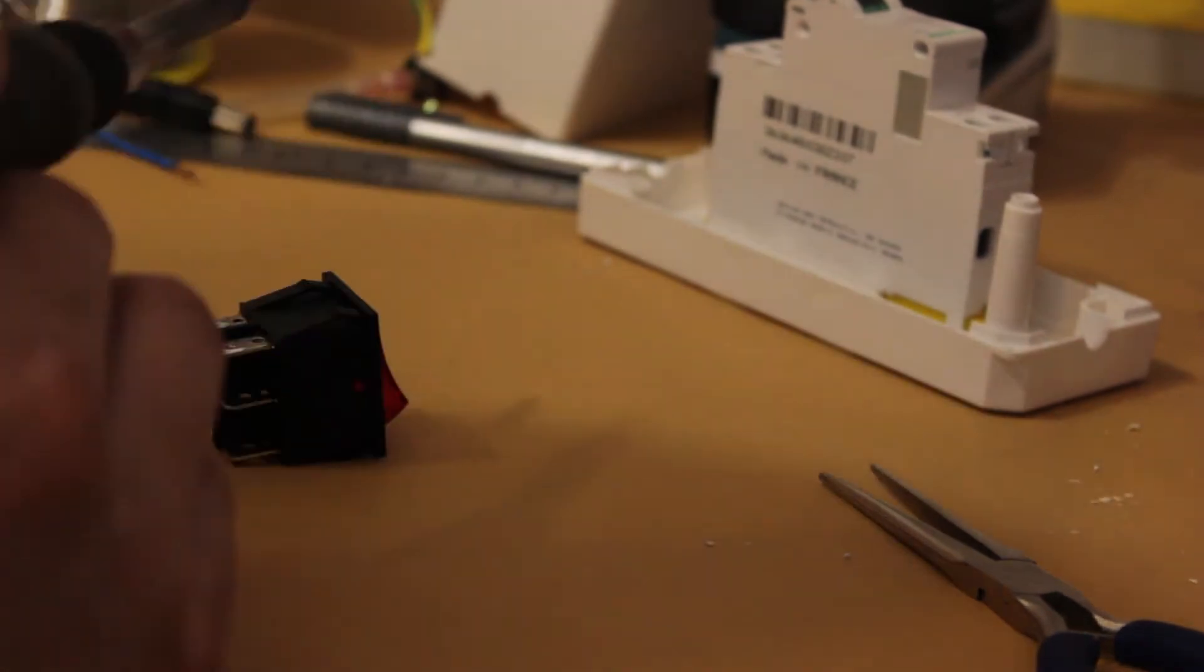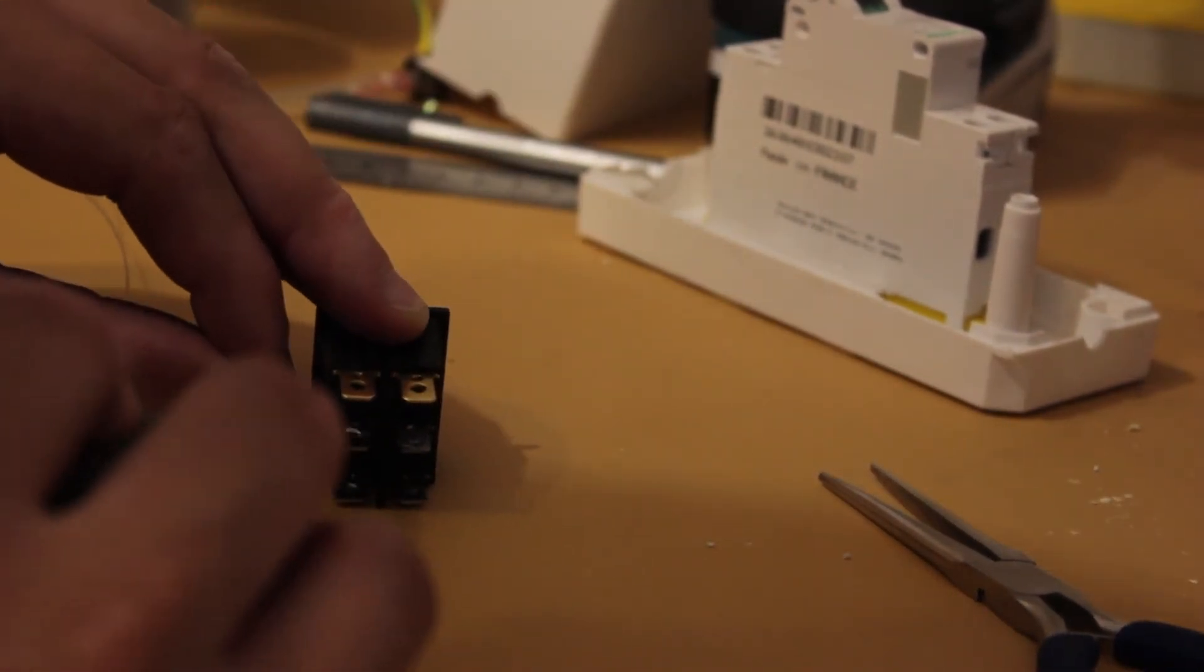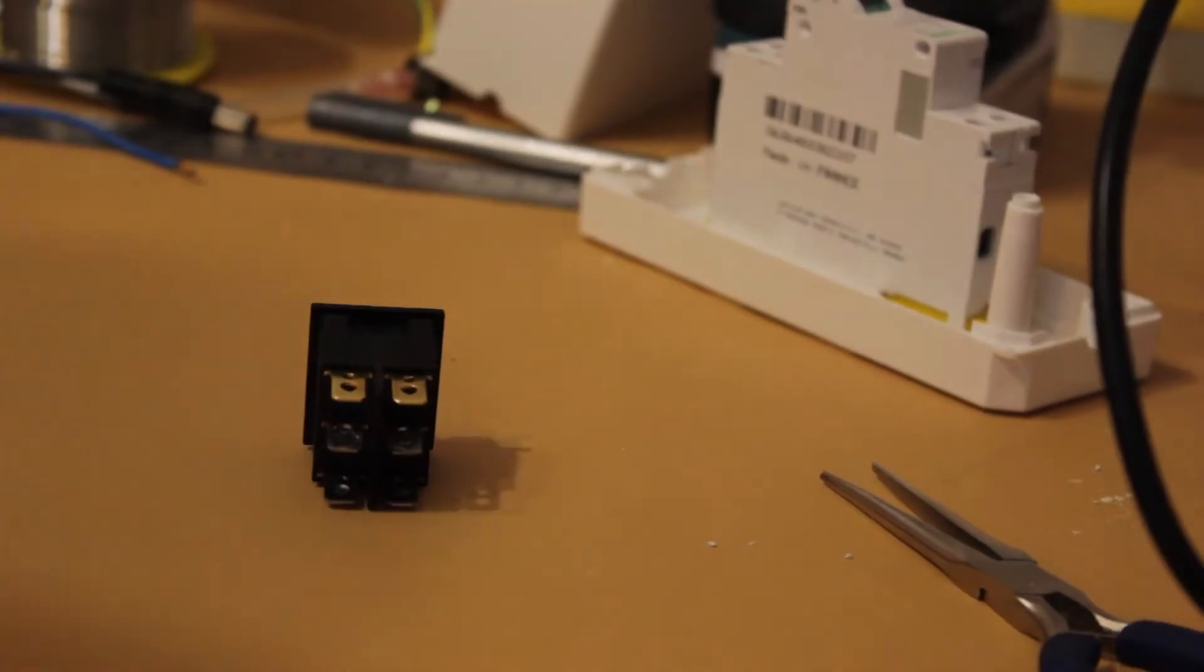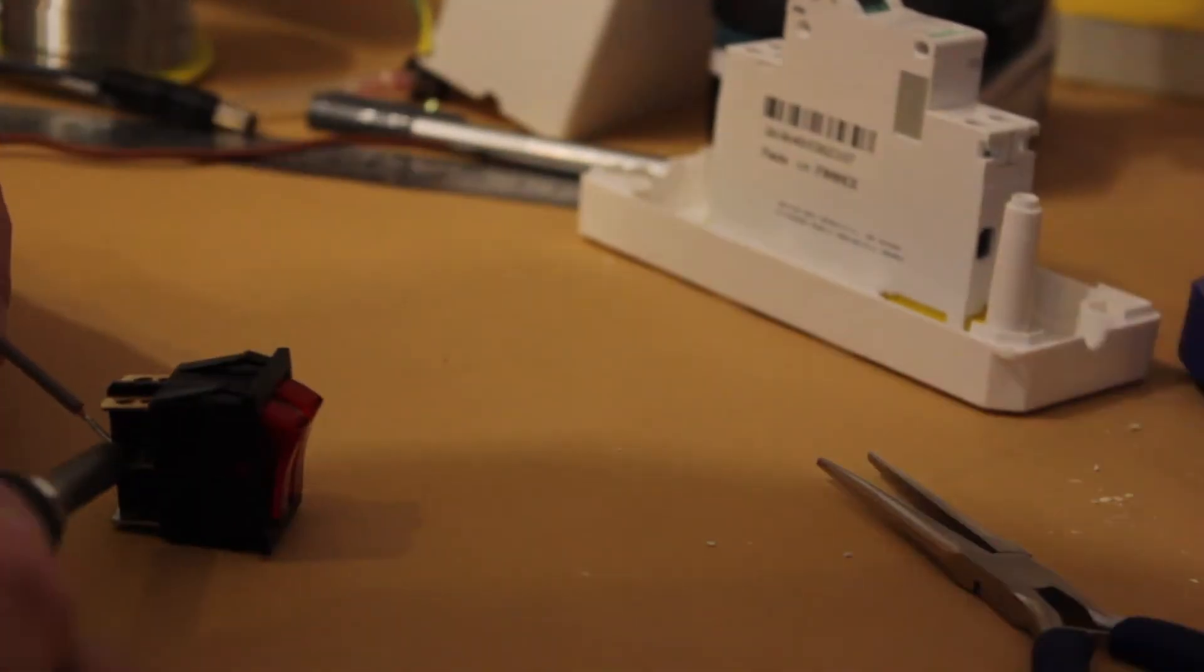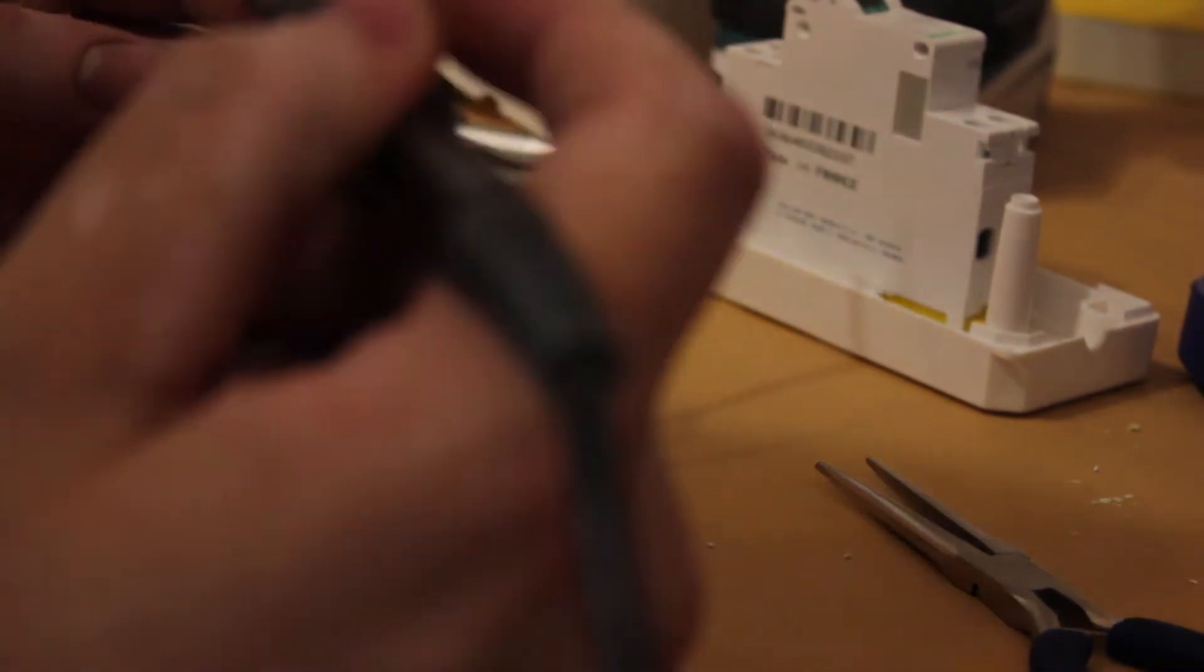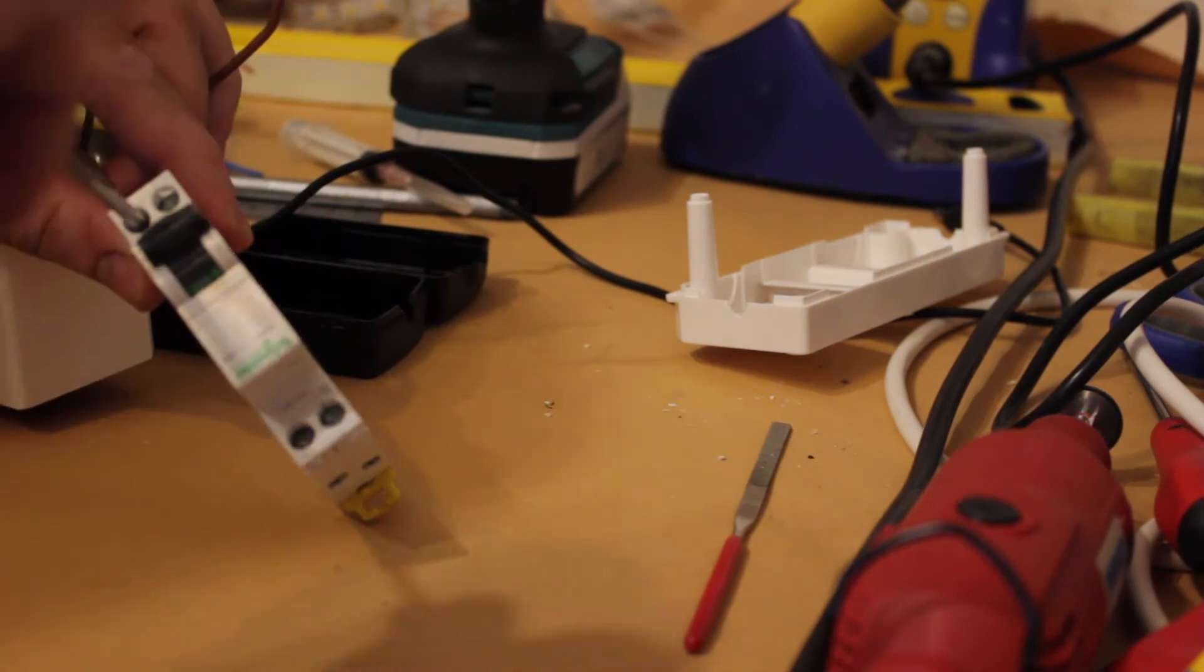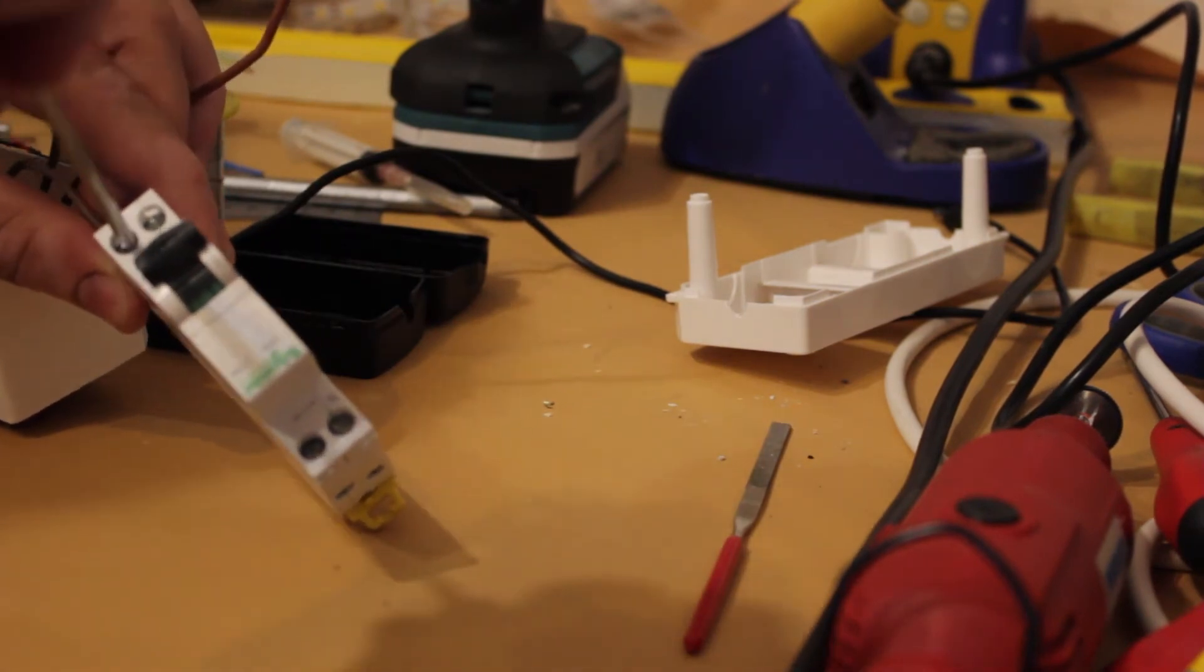I then soldered some of the leads to the double switch. With the switch installed in the breaker module, I started to wire in the breaker and test fit the entire setup.